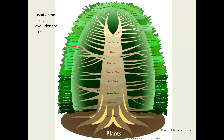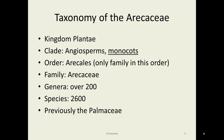On our evolutionary tree, the Arecaceae is circled. It's again in the monocots, and you can see where these plants rank in the general scheme of evolutionary relationships. The taxonomy of the Arecaceae is a little unusual in that the order contains only this one family. Generally, orders are groupings of related families, but in this case the Arecaceae is the only family in its order.